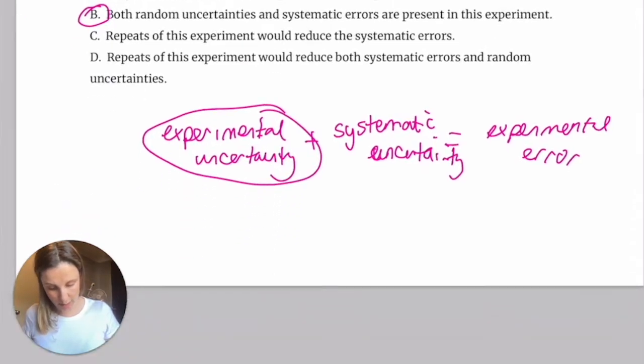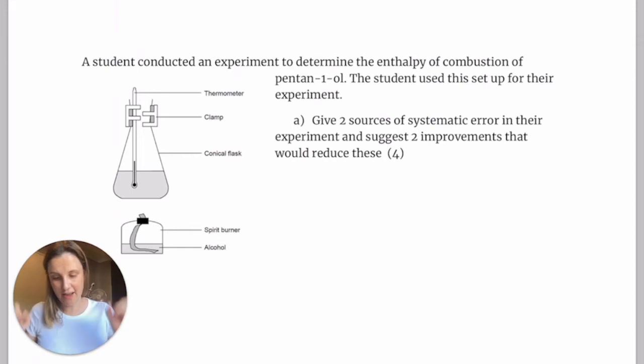All right. We have one more question to have a look at. So this one here is a really common calorimetry experiment. It's not very well done, but it asks for two sources of systematic error. So systematic, we're talking about things that are going to cause the same shift in answer every single time and two improvements.